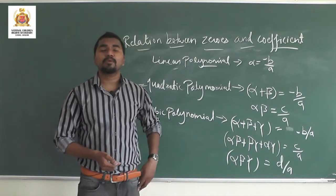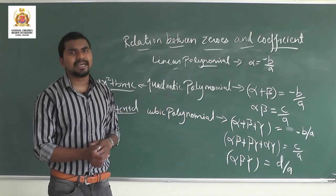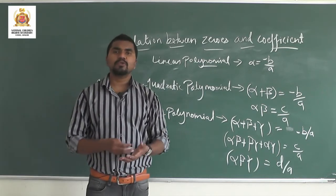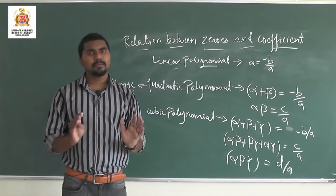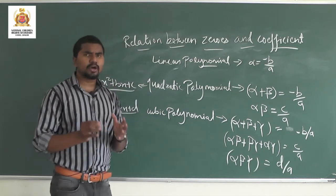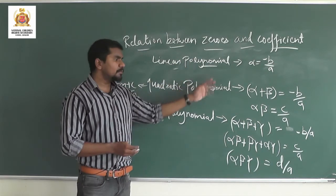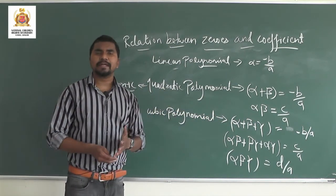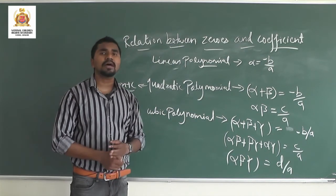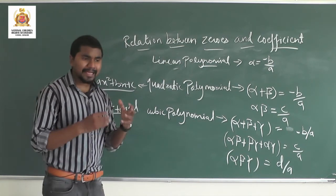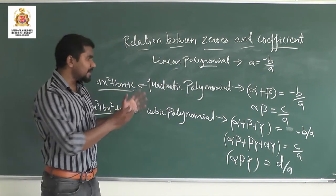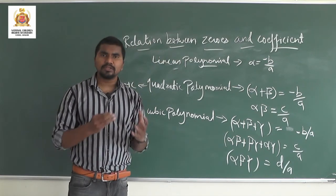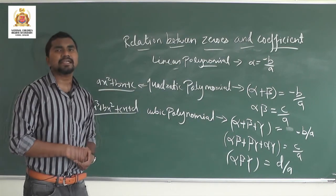This relation between zeros and coefficients is very important because the second chapter on polynomials will not ask you simple Class 9 questions. Board-level questions will be based on this topic. When we do the numerical questions in the next video, everything will become clearer. I hope this basic introduction was clear. See you in the next video with some good numerical problems to further clarify the relation between zeros and coefficients. Keep studying and enjoy — Bye Bye!